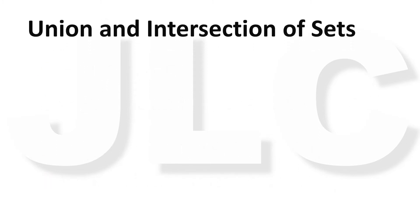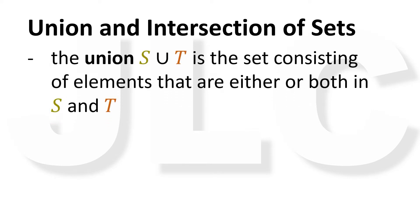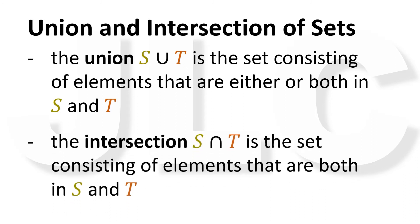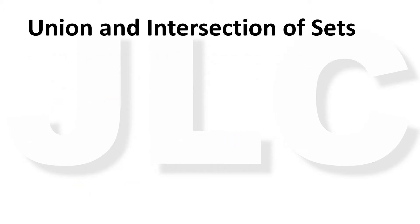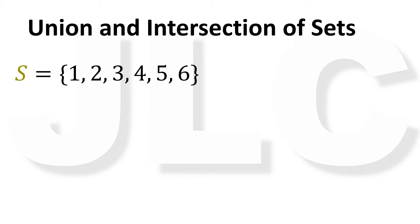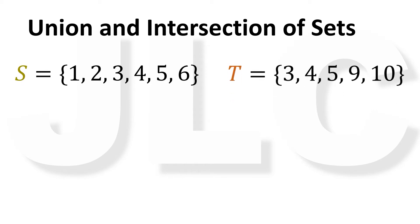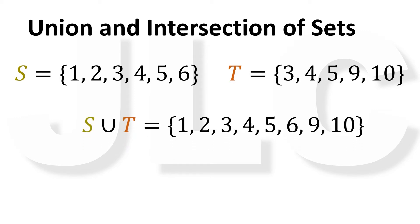Two important operations on sets are union and intersection. The union of sets S and T is the set consisting of elements that are either or both in S and T. The intersection of S and T is the set consisting of elements that are both in S and T. For example, if S equals {1, 2, 3, 4, 5, 6} and T equals {3, 4, 5, 9, 10}, then the union of S and T is {1, 2, 3, 4, 5, 6, 9, 10}. The intersection of S and T is {3, 4, 5}.